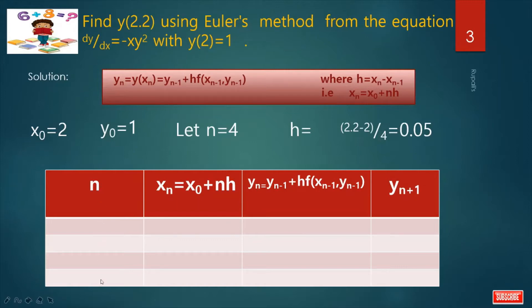How many number of intervals are there? 4. n values are 1, 2, 3, 4.